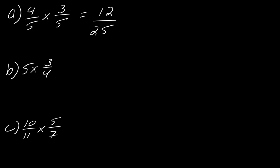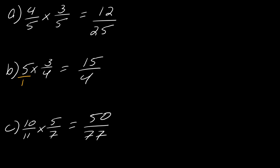For the next one, I have five times three over four. I have to remember that five is technically over an invisible one, so I can rewrite the problem like that. Five times three is 15 and four times one is four. For the next one, 10 over 11 times five over seven — same thing — this will be 50 over 77.